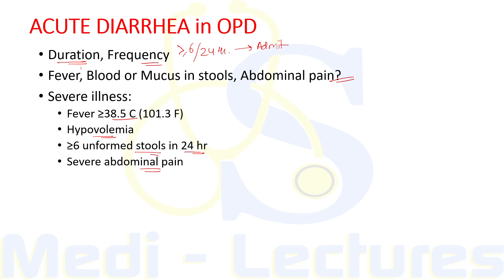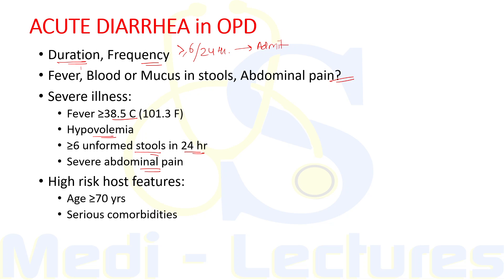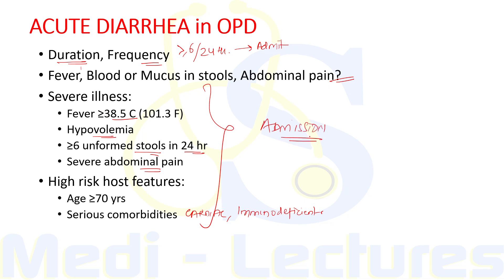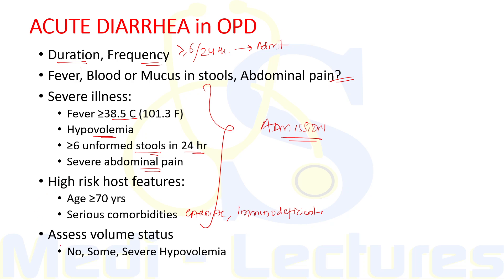High-risk host features include the patient being aged 70 years or older, presence of serious comorbidities such as cardiac disease including heart failure or old myocardial infarction, and immunodeficient individuals. If there is presence of severe illness or high-risk host features, these are indications for admission — these patients cannot be treated in the outpatient department. We must examine the patient and assess volume status, classifying it as no, some, or severe hypovolemia.